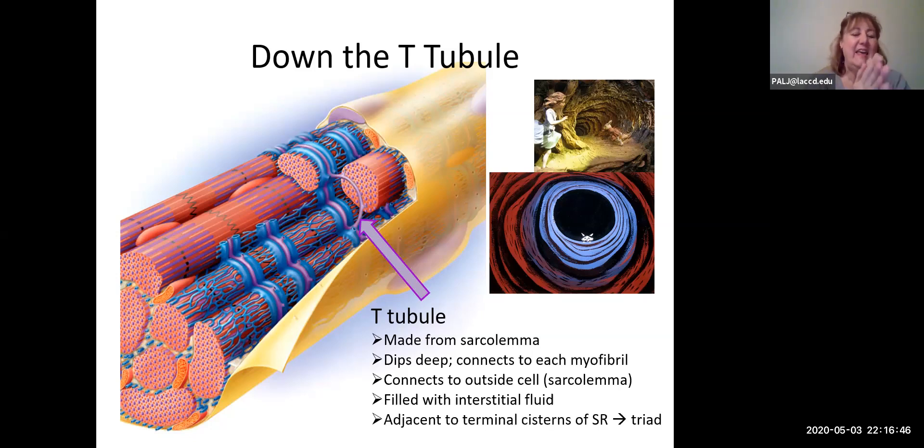In skeletal muscle we have this very important triad: a T-tubule in the middle and then a terminal cistern on each side.